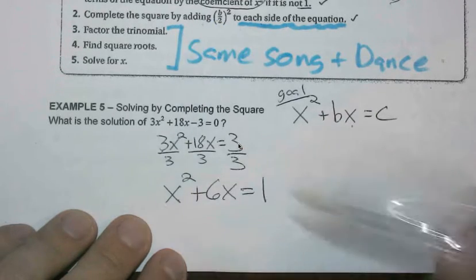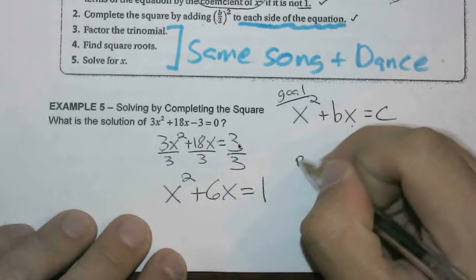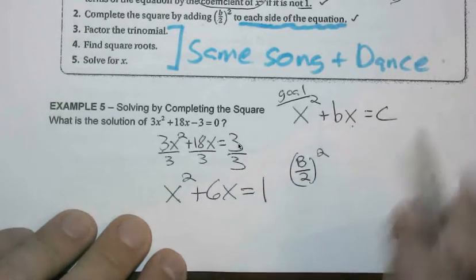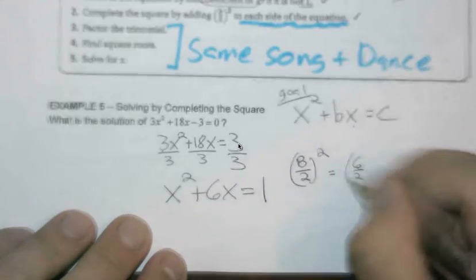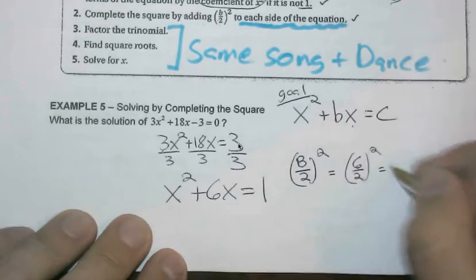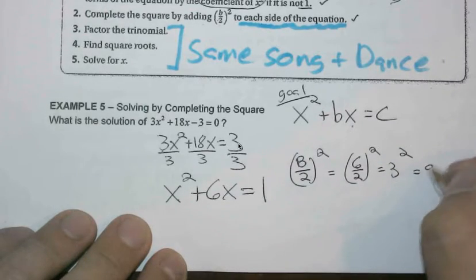Getting the constant that we need, which would be b over 2 being squared. In this case, it's 6. So we should have 6 over 2 being squared. So pretty much 3 squared, which is the actor formerly known as 9.